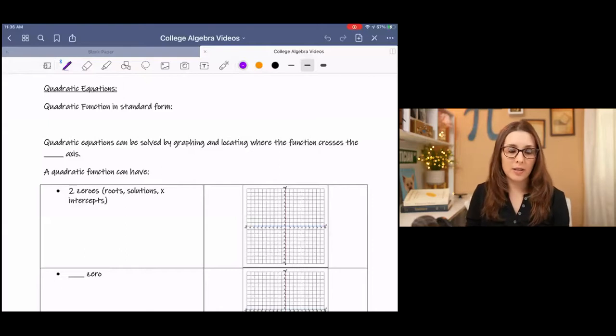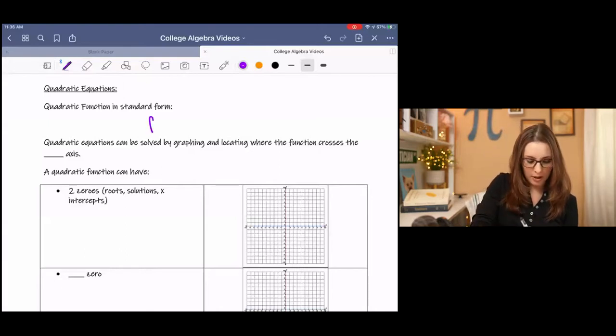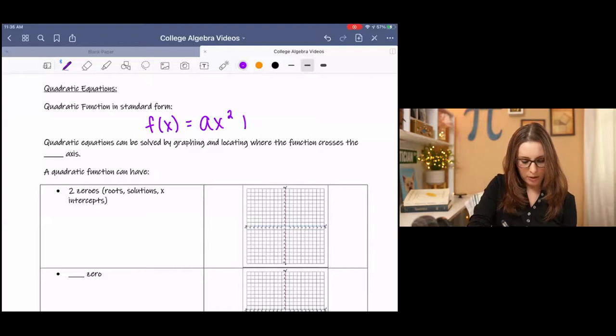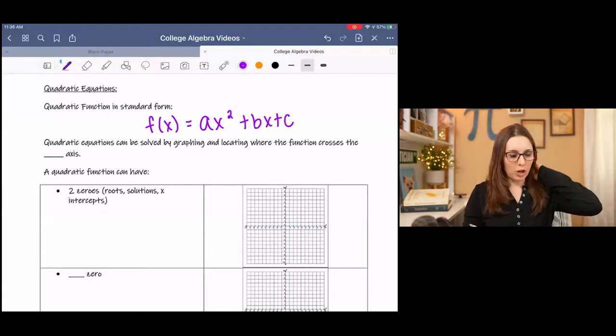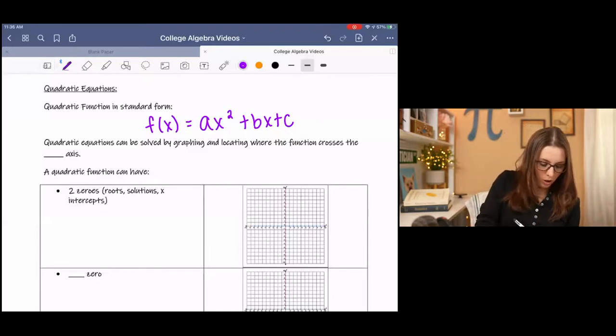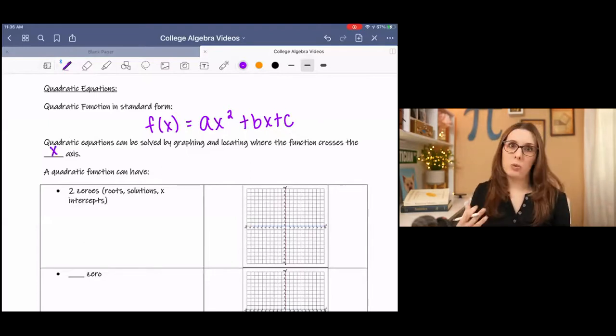Now when we're solving a quadratic, we are looking for where the function crosses the x-axis. So we're solving for x just like we do in a linear function, but now it's a u-shaped graph called a parabola. We know from my previous lessons that a quadratic equation in standard form looks like f(x) or y equals ax² + bx + c. Quadratic equations can be solved by graphing and locating where it crosses the x-axis or by factoring, which is what we're going to learn today.